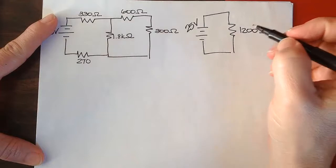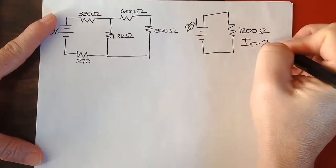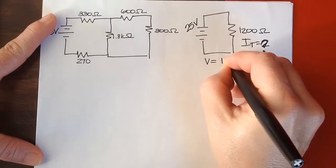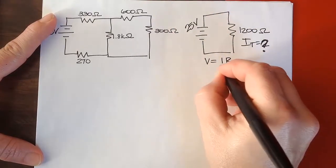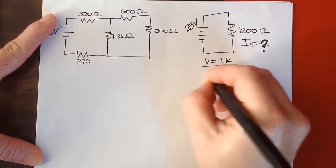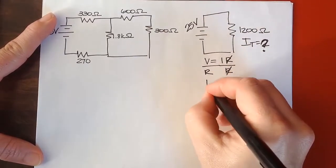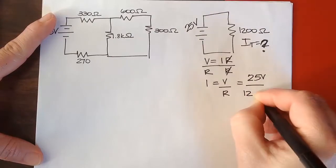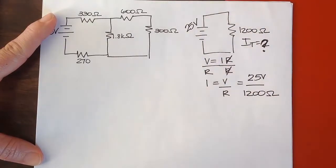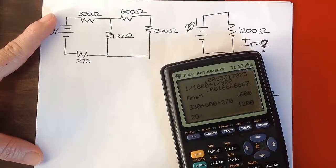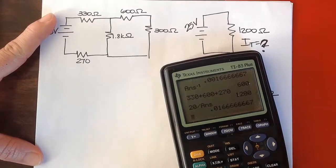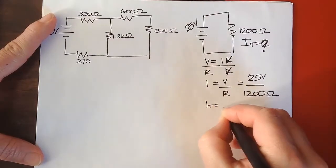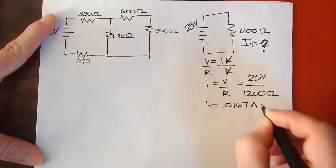So, let's start by finding I total. That's supposed to be a question mark, not that number 2. Remember we have Ohm's Law, V equals IR. To get I by itself, we need to divide both sides by R. And then they cancel on this side, and so we have I equals V over R. So, that's going to be 25 volts divided by 1200 ohms. 16.7 milliamps, or the total I is going to be equal to 0.0167 amps.